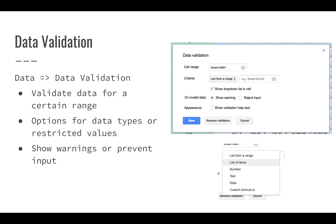You also have options for data validation. Data validation gives you the capability to allow a user to pick different options from a cell. It also allows you to validate that data is of a certain type — so something like making sure this is a number, text, or a date. Data validation helps make sure your data is sound and makes sense. We'll get into each one of these different options in the videos for this module, so keep an eye out for those videos. Thank you for watching.